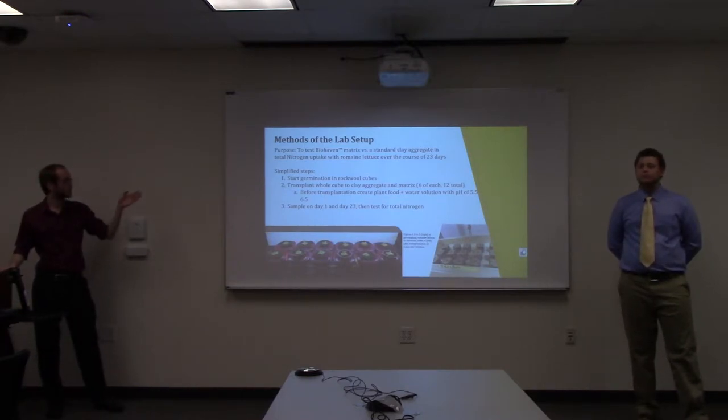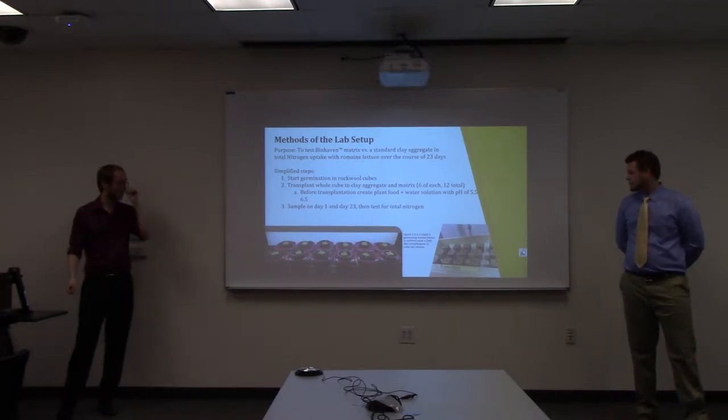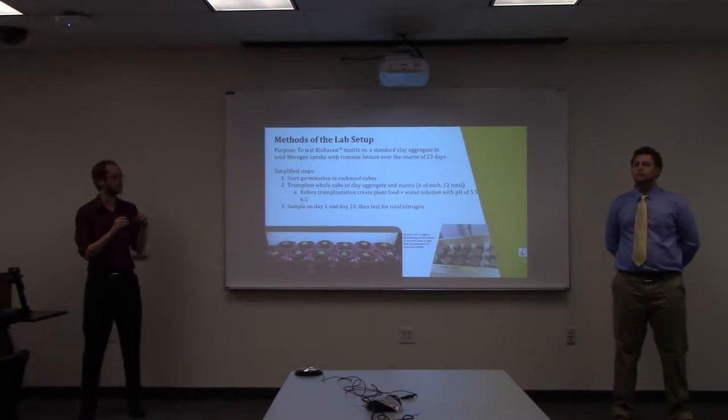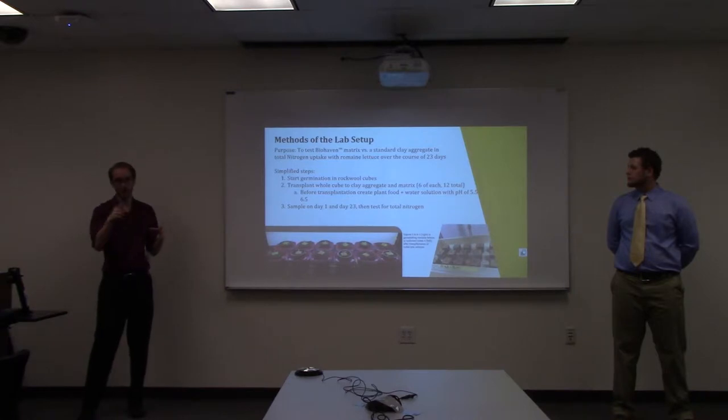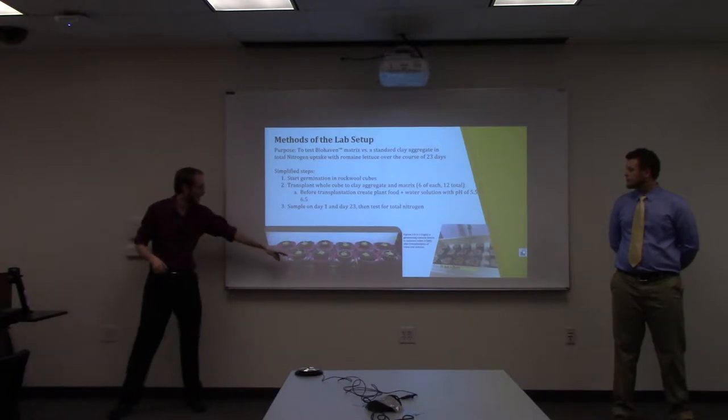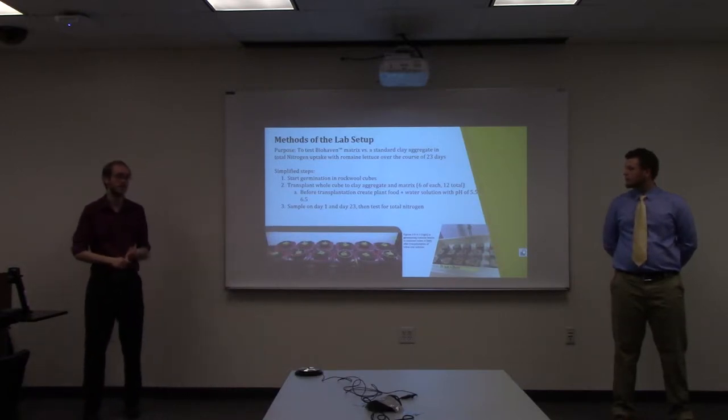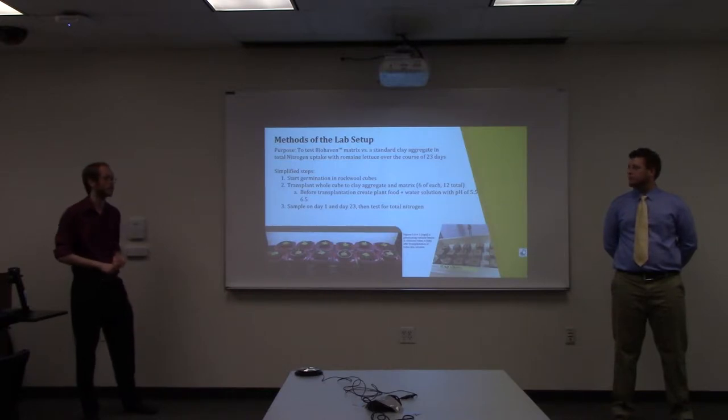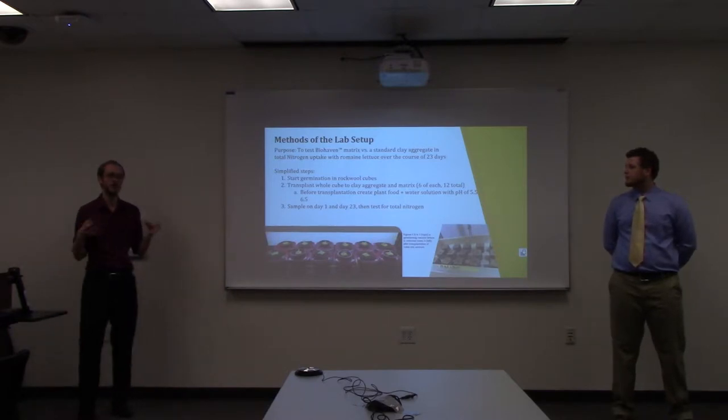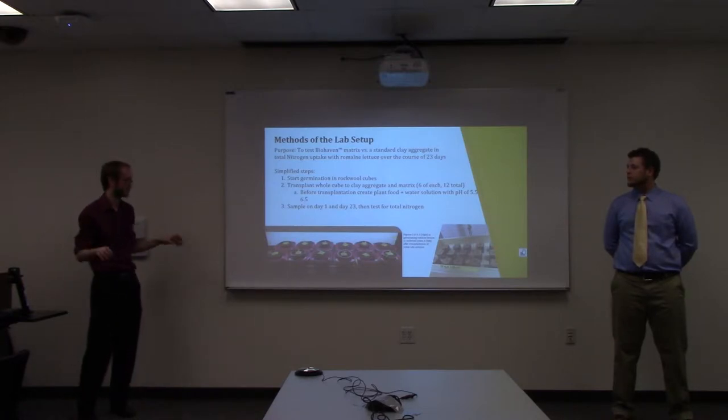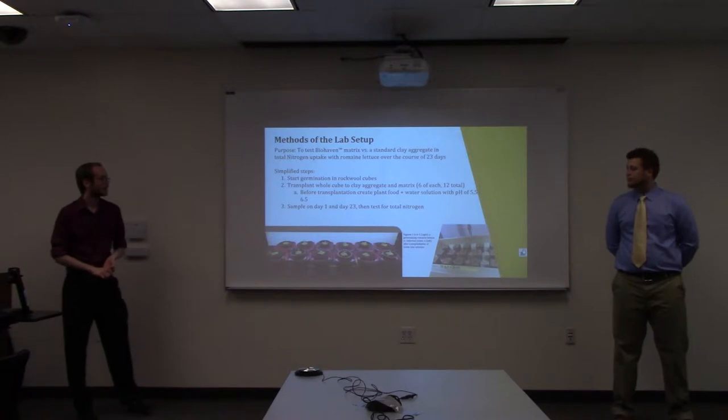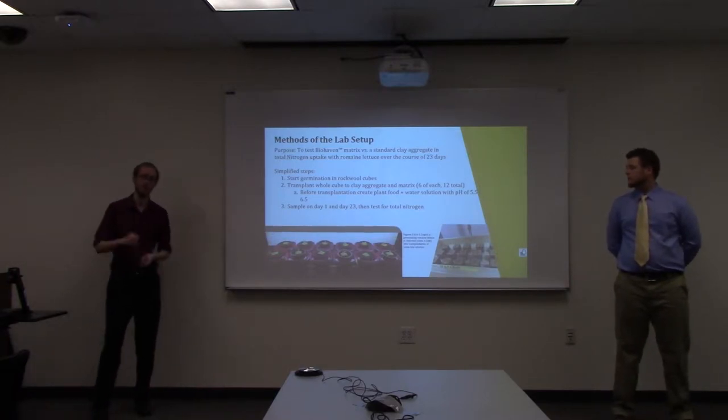Our steps are simple. We started germinating with rockwool cubes, putting three seeds in each, watering every day for a week. Then we transplanted these rockwool cubes into either a cut out section of Biohaven material or clay aggregate, standard hydroponics. Fifth Season hydroponic grow shop in Charlottesville recommended this because of its high surface area. We created a nutrient solution, added plant food to water, and fixed the pH to about 5.5.